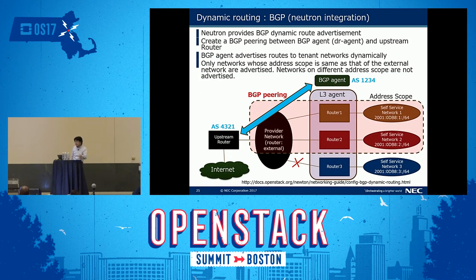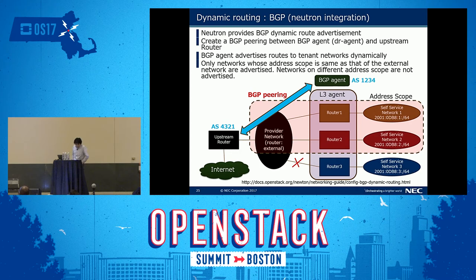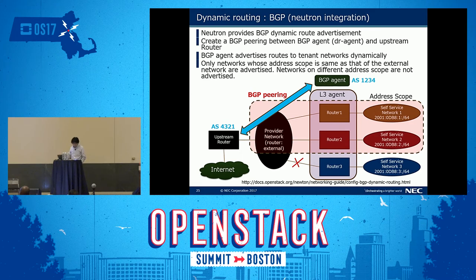The first option is dynamic routing with BGP. Neutron itself supports BGP dynamic routing route advertisement. In this case, the OpenStack deployment acts as one AS, and BGP peering is created between the BGP agent and the upstream router. When a tenant network and router are created, the BGP agent advertises a new route to the upstream router. Note that only networks which belong to the same address scope as the external network are advertised.